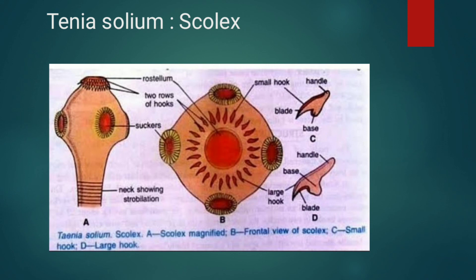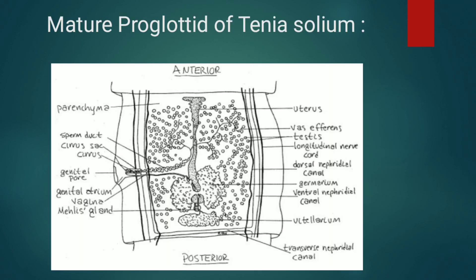The scolex lies buried in the intestinal mucosa of the host intestine and destroys host tissue. Now we see the mature proglottid of Taenia solium. Each mature proglottid is square in shape. The lateral sides contain lateral longitudinal nerve cords and lateral excretory canals. A set of male and female reproductive organs is present in each mature proglottid. The female genital system consists of ovarian lobes, oviduct, ootype, vagina, uterus, and vitelline gland.